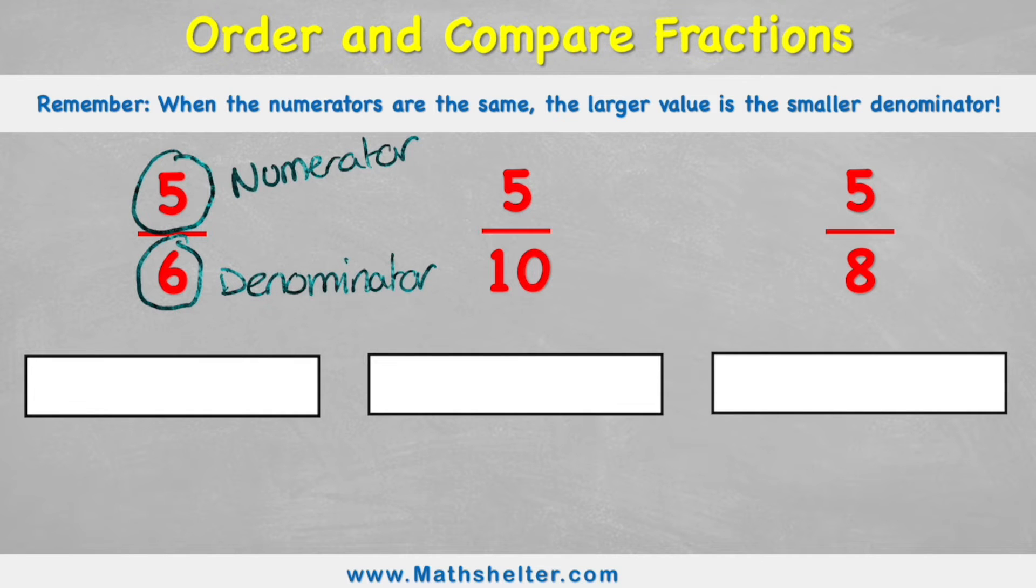Okay, and what we're going to try and remember today is when the numerators are all the same, the larger value, so the fraction with the larger value, is the smaller denominator. Let's see what that means by breaking down these fractions.